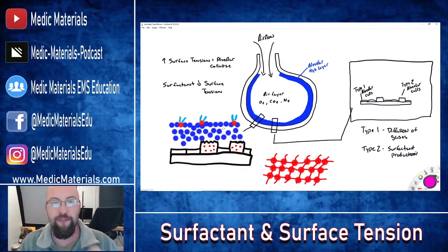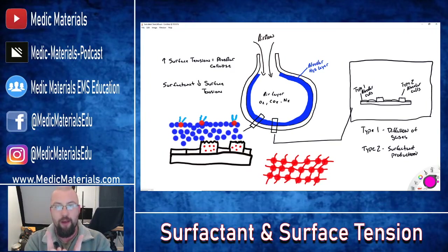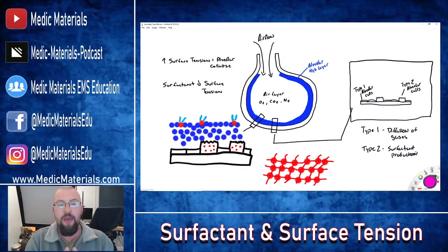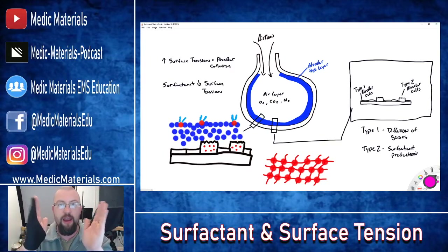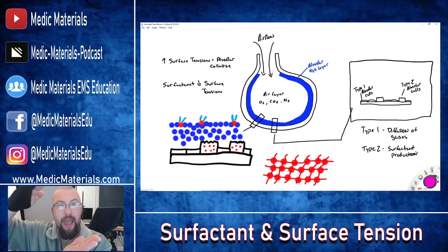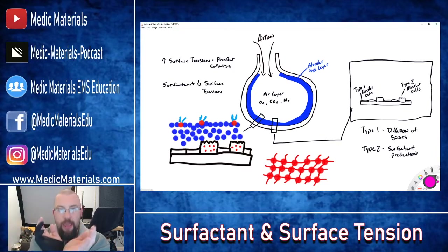The only way to fix this is with surfactant. The Type 2 cells produce their surfactant, which goes out in myelin sheaths. They produce protein strands that stick out like antennas into the air barrier — these are hydrophobic, meaning they do not like to interact with water. They stick out into the air layer and they pull that water barrier back upward toward the air barrier. The more surfactant produced, the more that tension pulls upward, opening the alveoli by decreasing surface tension.